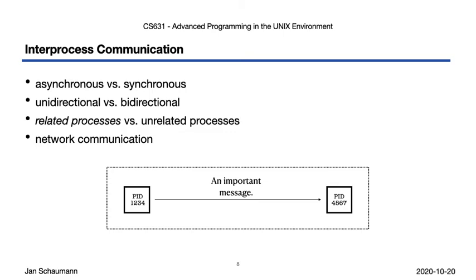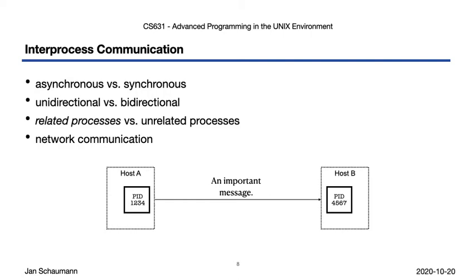We also want to consider how processes on different hosts communicate with one another — the APIs used to perform network communications, where instead of one process sending a message to another process on the same host, you have a process on one host talking to a process on a different host, communicating over a network like the internet, which, as we all know, looks like a cloud.